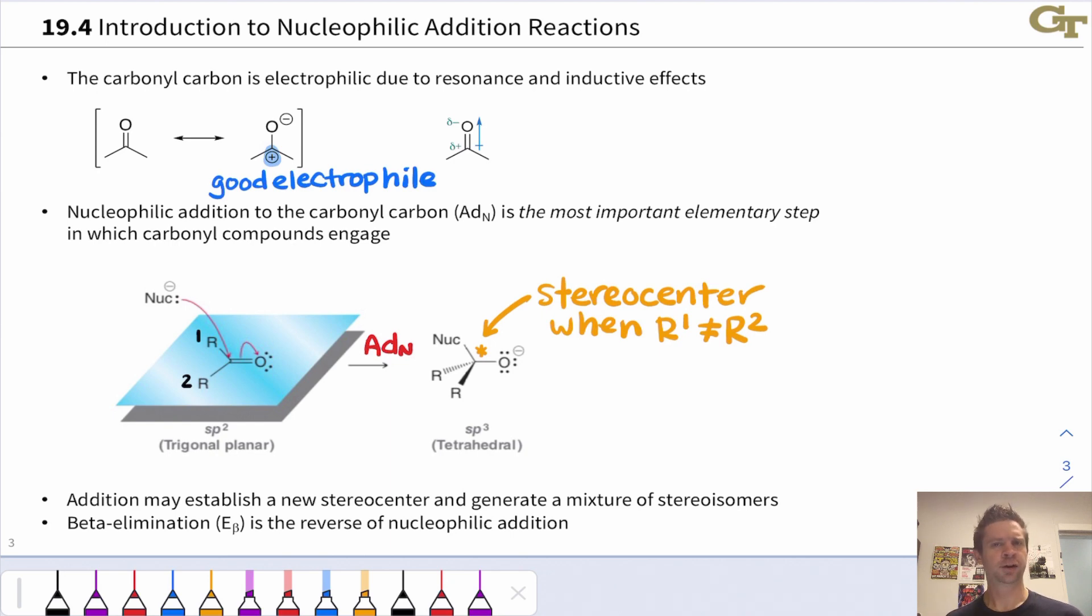One other useful observation is that the reverse of nucleophilic addition is beta elimination: elimination of the nucleophile with reestablishment of the CO double bond. The electron flow for that looks like these curved arrows in blue, with a new CO pi bond established and the nucleophile departing.